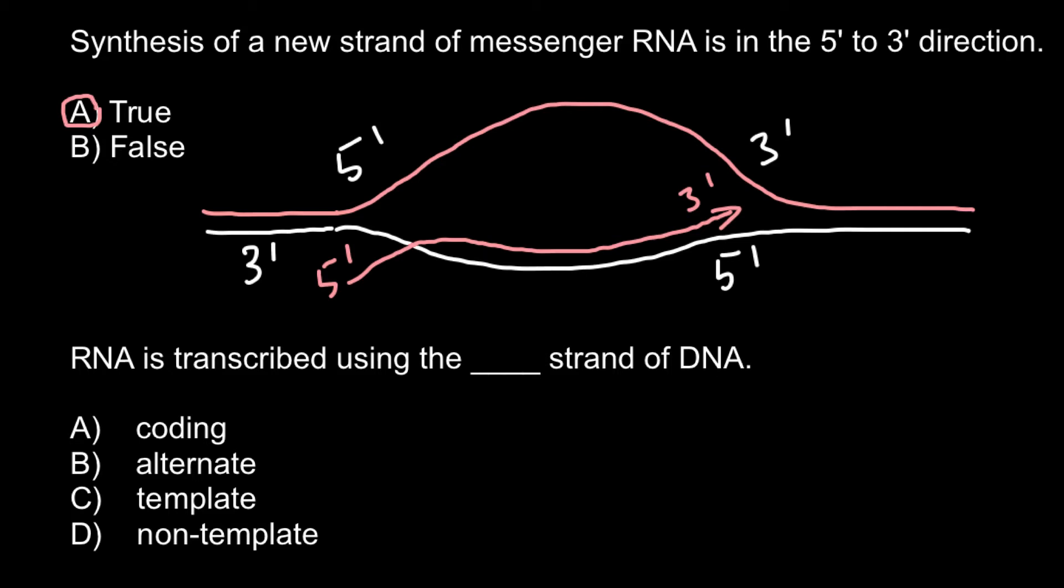So as you see, messenger RNA has the same direction as this strand of the DNA. So we call this strand of the DNA coding strand of the DNA, because the code here would be the same as code of the messenger RNA.